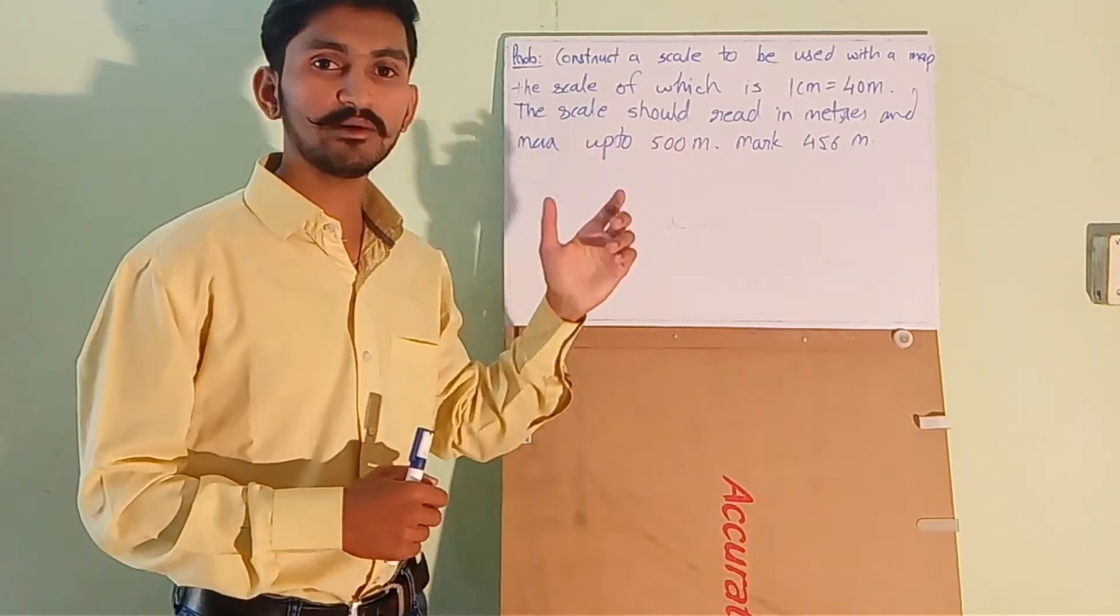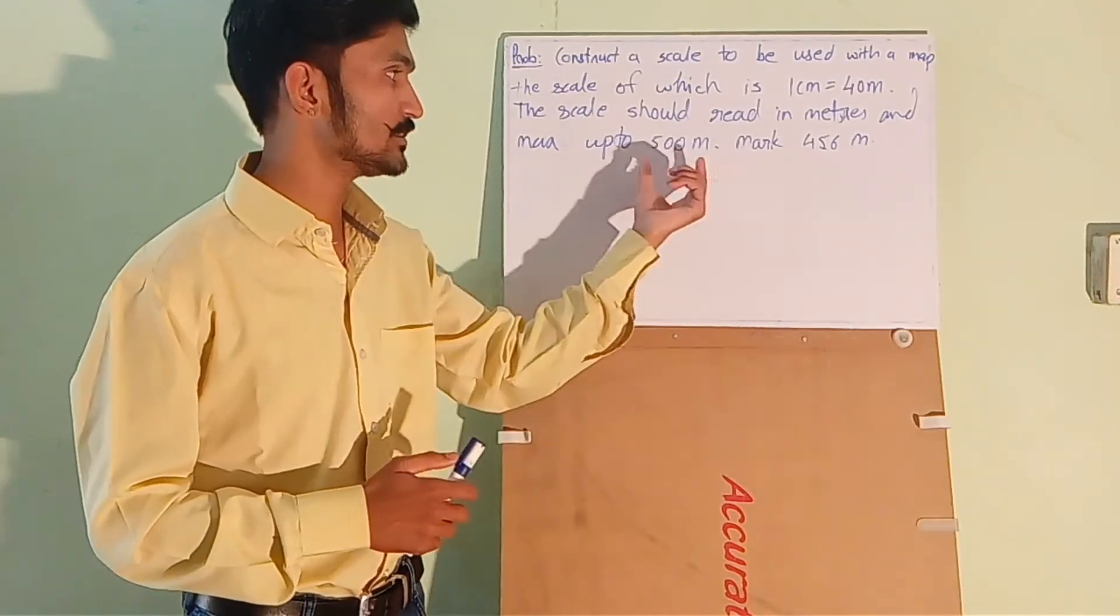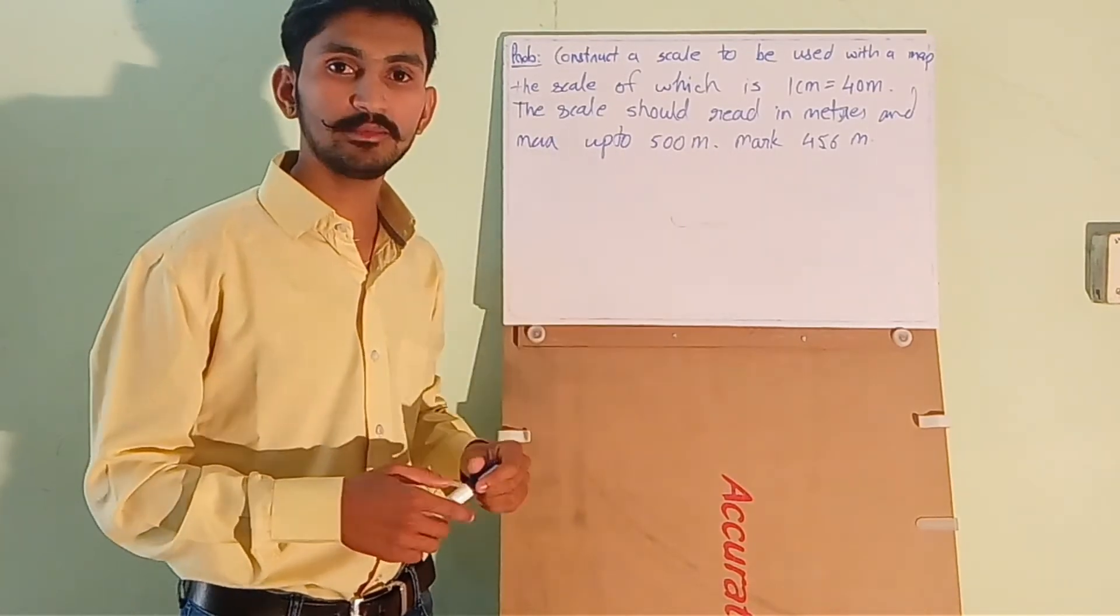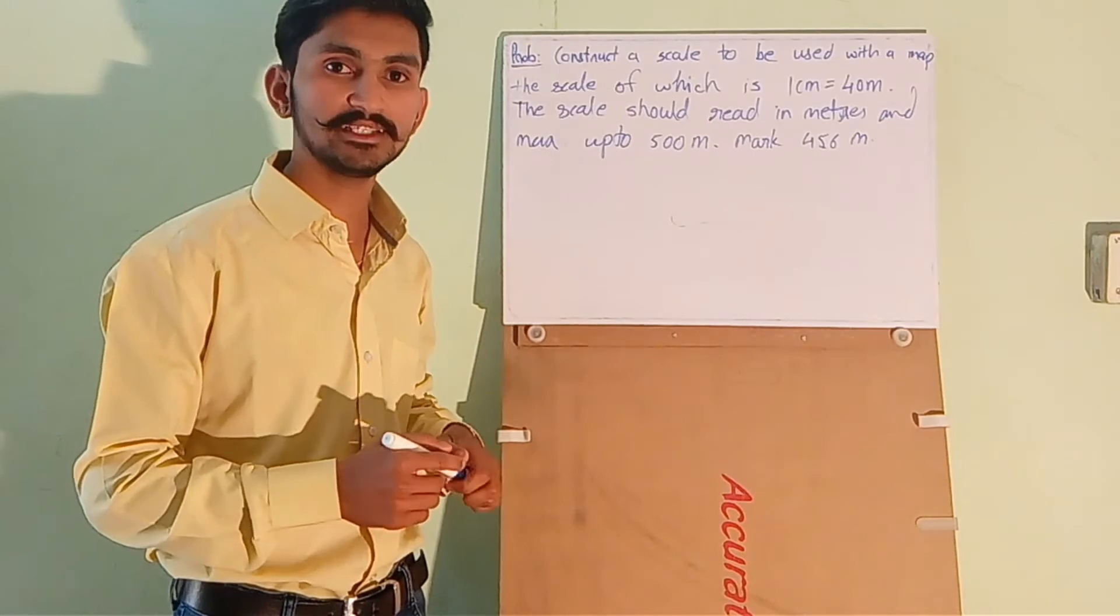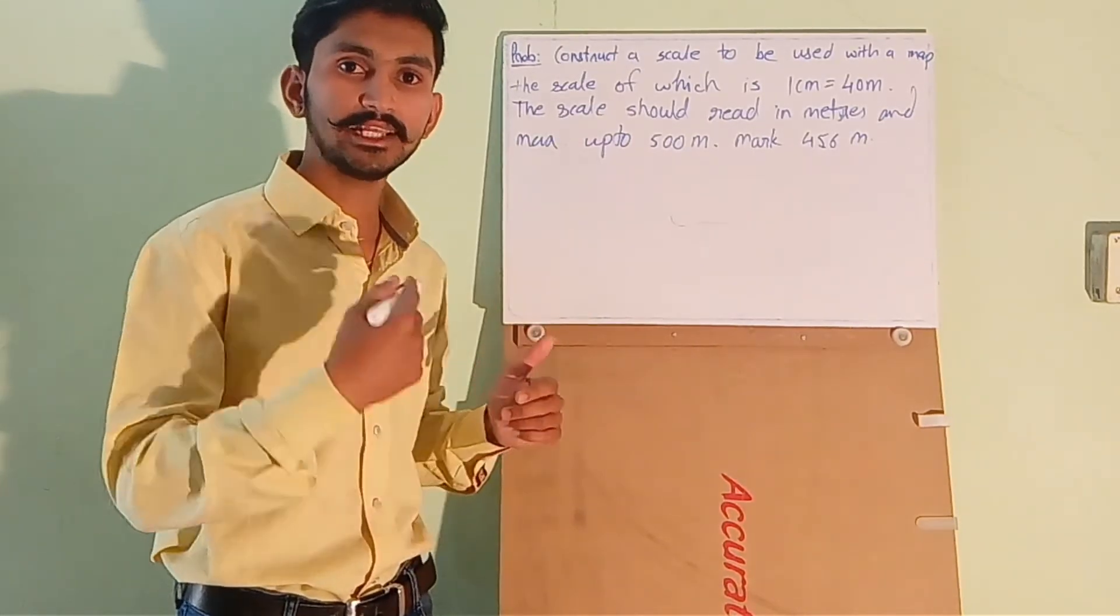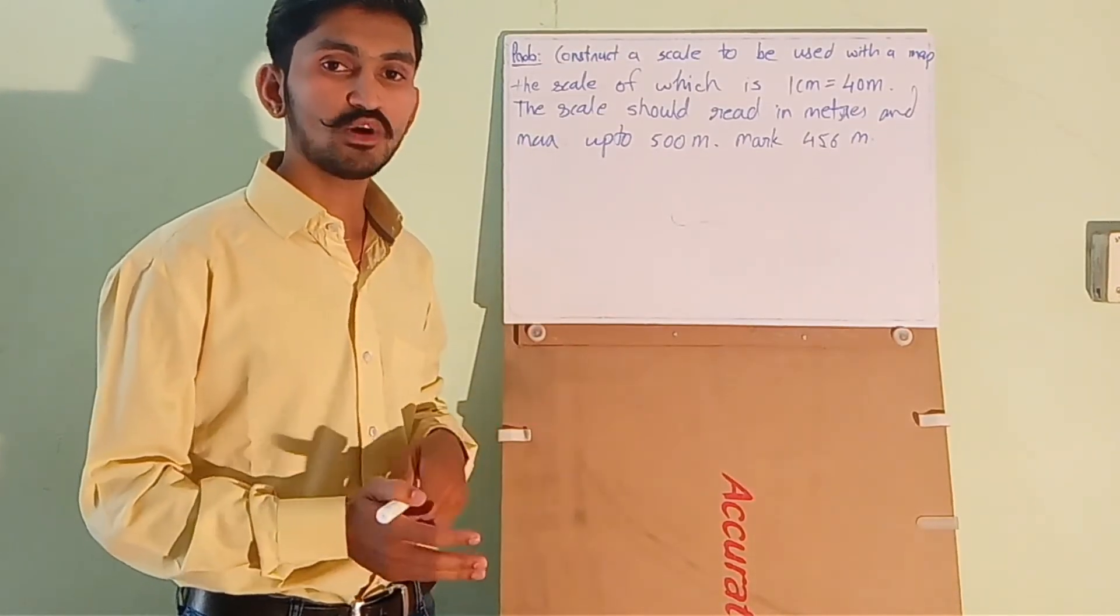So they do not have mentioned that we have to construct a diagonal scale but they have provided the data like we have to measure maximum up to 500 meters. So this is not easy to read 500 meters on a plain scale. So we will be reading in hundreds of meters, tens of meters and meters. We have to construct a diagonal scale.